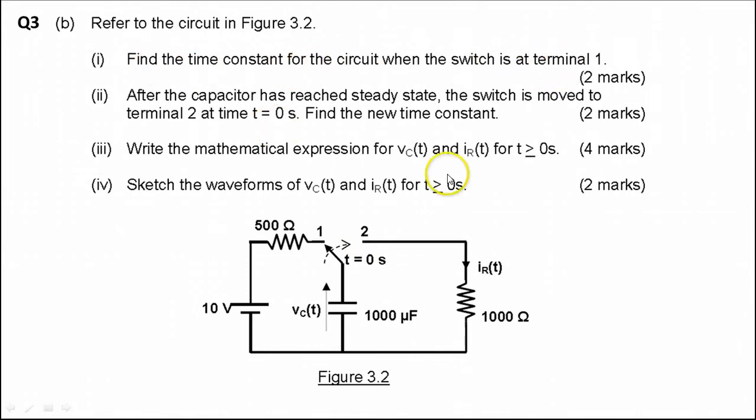We are asked to calculate the time constant of the circuit when the switch is in terminal 1. When the switch flips here, the effective circuit is this circuit. When the switch flips to the other position, the voltage across the capacitor discharges through this circuit, and we need to find the time constant for this first circuit.